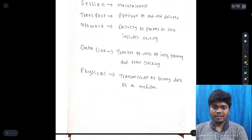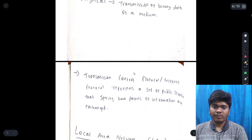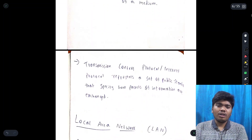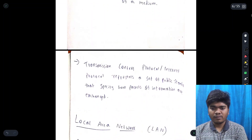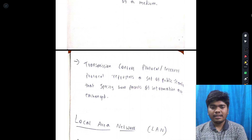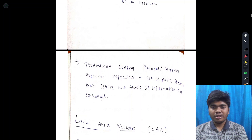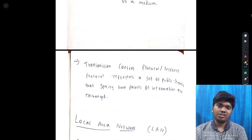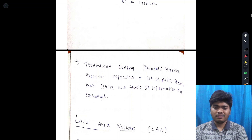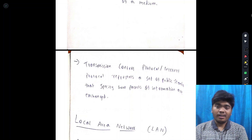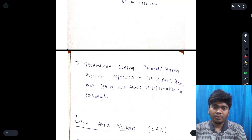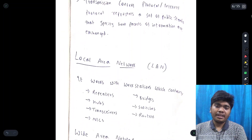Network layer handles delivery of packets of information including routing. Data link layer handles transfer of units of information, framing, and error checking. Physical layer handles transmission of binary data over a medium. Transmission Control Protocol represents a set of public standards that specify how packets of information are exchanged — the information in a system is exchanged in the form of packets.